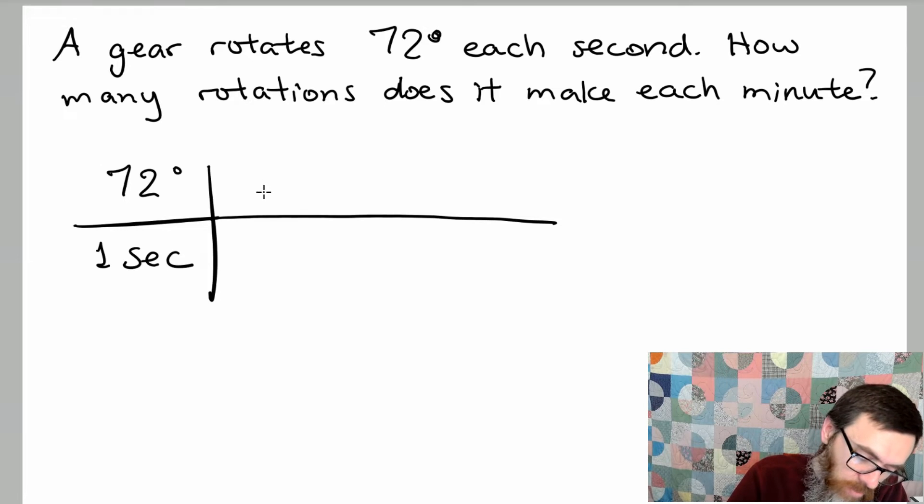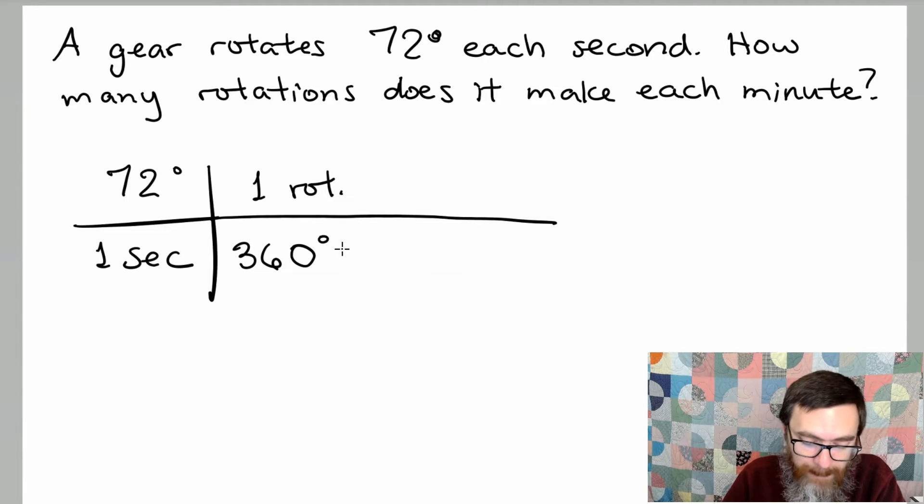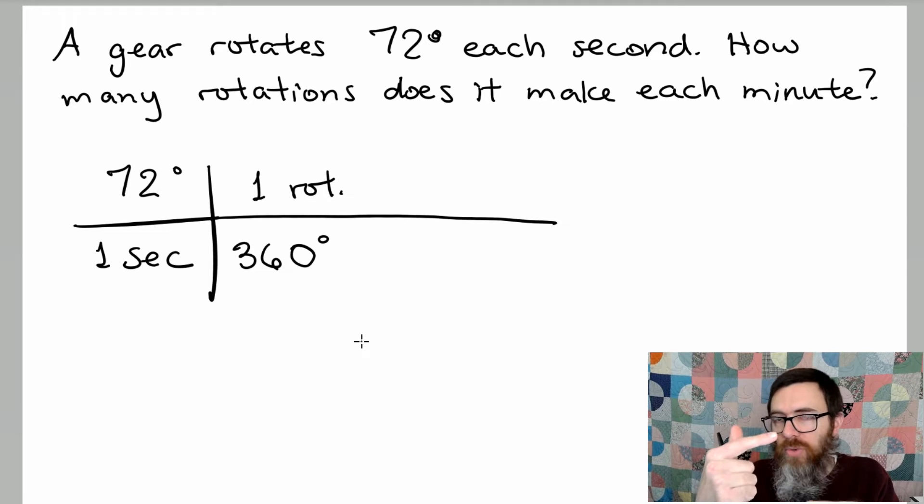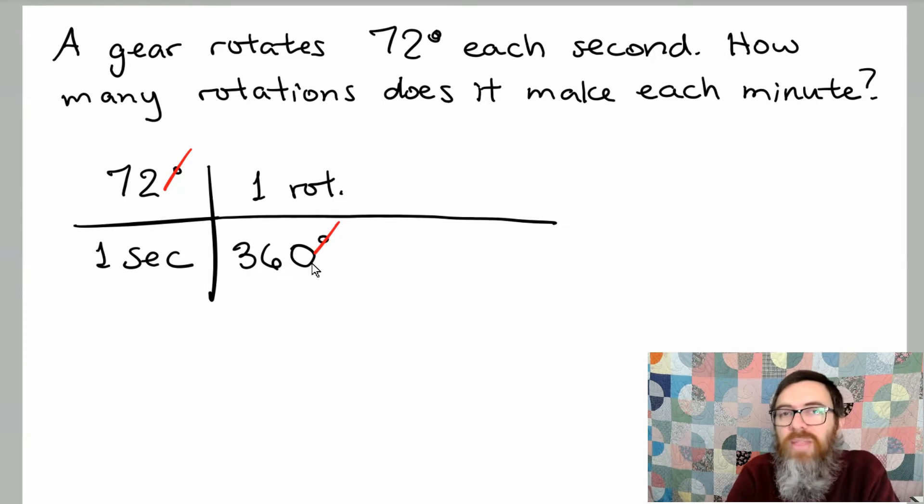So we know that for every one rotation the gear would have to go through 360 degrees. Now I could have said 360 degrees in the numerator over one rotation because those are equivalent. However we want to make sure that the units here are going to line up in such a way that they can be reduced just like you would reduce a common factor.